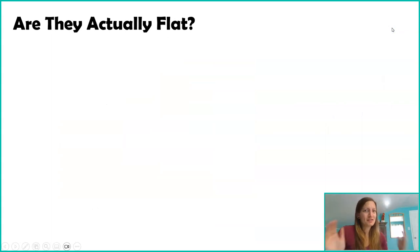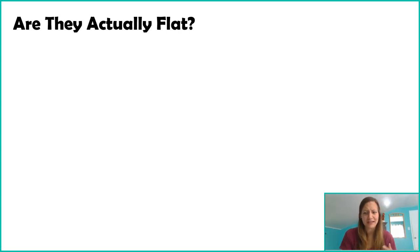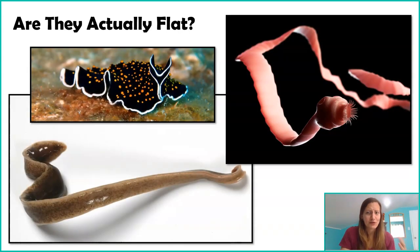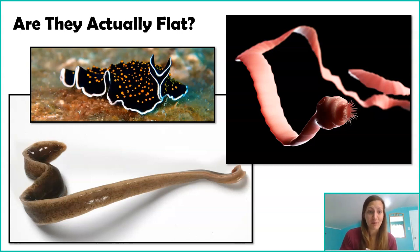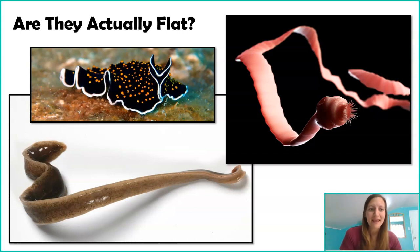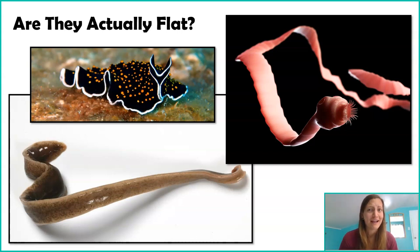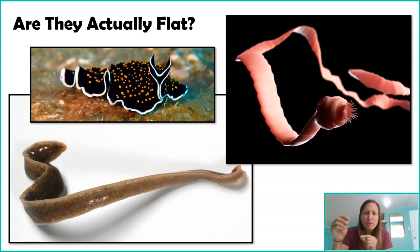These are called the flat worms, and you might be wondering, are they actually flat? Here are some different examples of flat worms found in Phylum Platyhelminthes. And yes, they are indeed flat. There are not many pictures taken from the side, probably because they're so flat, but I tried to find some pictures that showed angles so you could really see this.